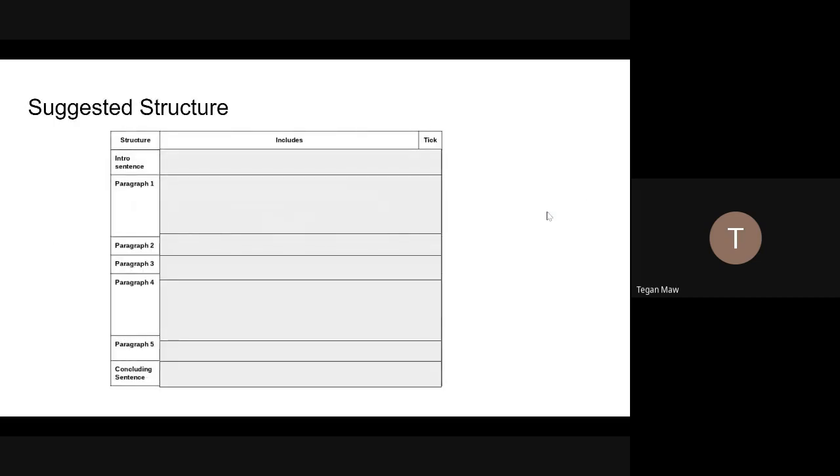The structure I would suggest would be to start off with an introductory sentence. That's where you define the research method or the debate that it's asking you about in the question stem. In your first paragraph is where you're talking about your first study or theory. We're just going to look at studies today. So you would talk about the psychologist, the year and the aim in a sentence. Another sentence on the method, including reference to the method that's in the question and any conclusions they made.